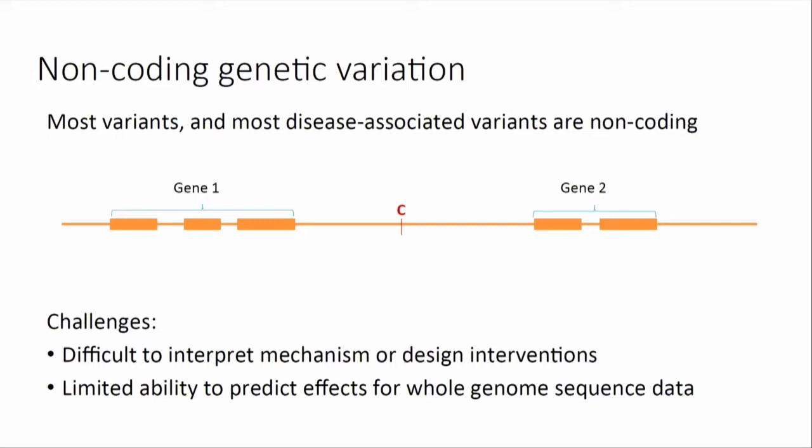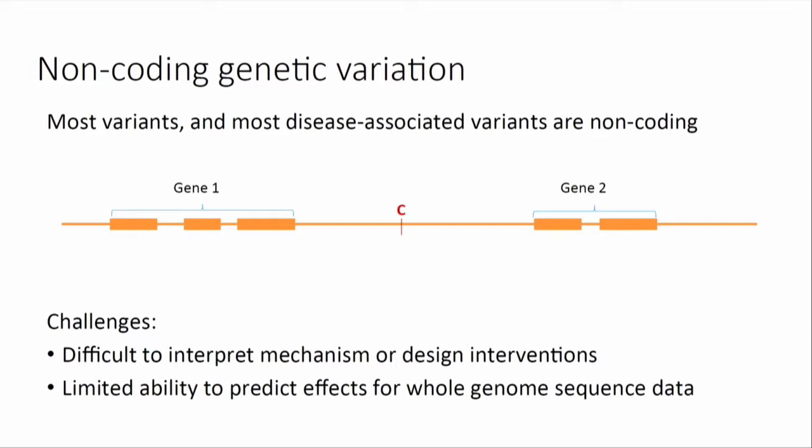The motivation behind this, as most of you know, is that most variants in the human genome in the population and most disease-associated variants are non-coding. This presents a number of challenges. The two that I'll be focusing on today: when we look at things like GWAS, we have limited ability to immediately understand what a non-coding disease-associated variant is actually doing, what are its mechanisms, and therefore how could we possibly design interventions or drugs that might help us treat these disorders. And second, when we start moving to whole genome sequencing and looking at actual individual personal genomes, all of these non-coding rare variants are extremely difficult for us to understand or predict their effects.